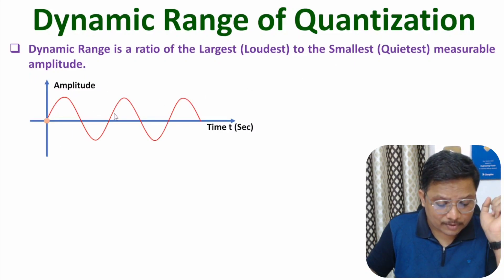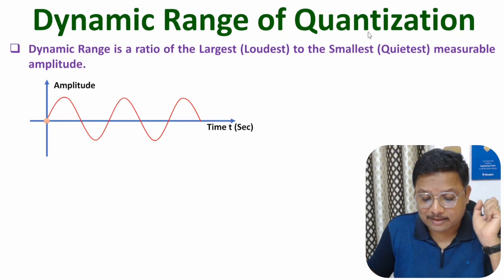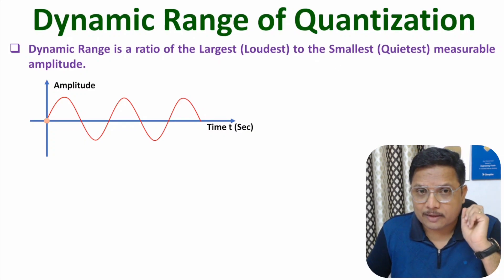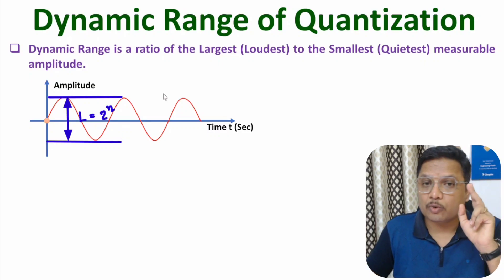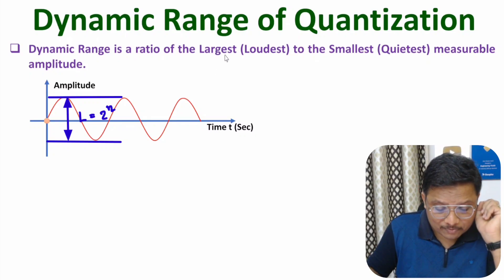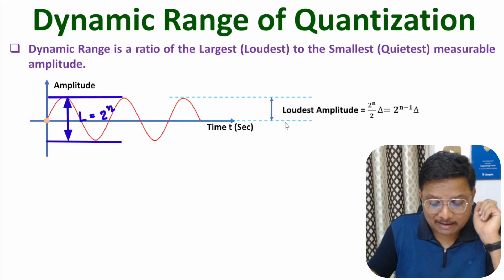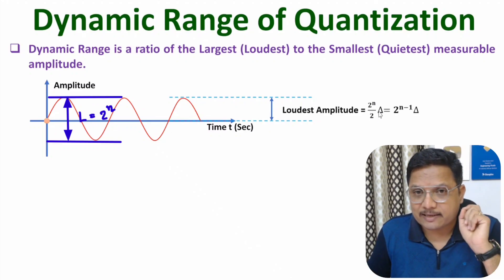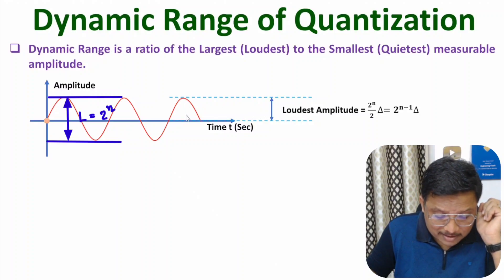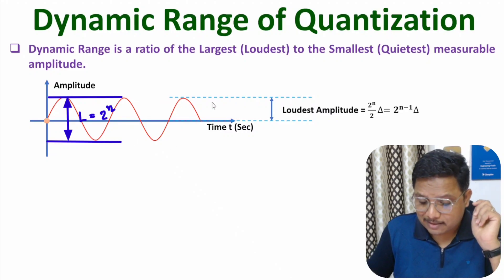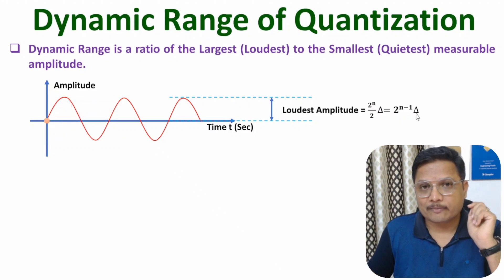I'll consider one sine wave, and if you perform quantization on this sine wave, the total number of levels will be 2 to the power n — so from minimum to maximum, total levels will be 2^n. If you talk about the largest measurable amplitude, that should be measured with respect to zero, so the largest measurable amplitude will be (2^n / 2) × δ, where δ is the step size. That gives us 2^(n-1) × δ.